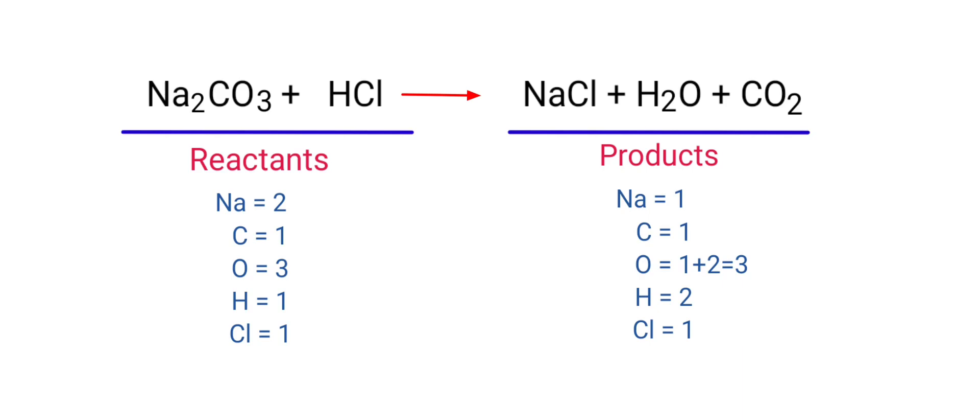The number of atoms are not balanced on both sides. To balance the chemical equation, we need to make use of coefficients. A coefficient is a number that we place in front of a chemical formula.